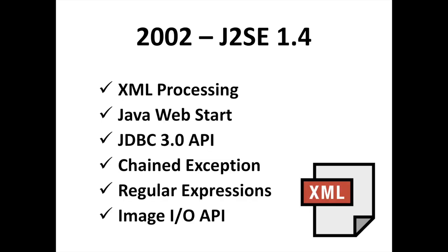Released on February 6, 2002, Java 1.4 improved programmer productivity by expanding language features and available APIs, with XML processing, Java Web Start, JDBC 3.0 API, chained exceptions, regular expressions, logging, and non-blocking IO (NIO).